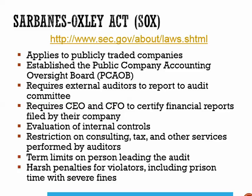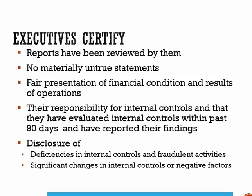There are also term limits on people who lead the audit, and severe penalties for those who violate the rules. CEOs and CFOs must sign off and certify that the financial statements are accurate — more importantly, that there are no materially untrue statements — so that they fairly present the financial condition and results of operations in all material respects. Officers are also responsible for signing off that internal controls have been evaluated within the previous 90 days, and must disclose all deficiencies in internal controls, any fraud involving employees in internal activities, and any significant changes in internal controls that could have a negative impact.